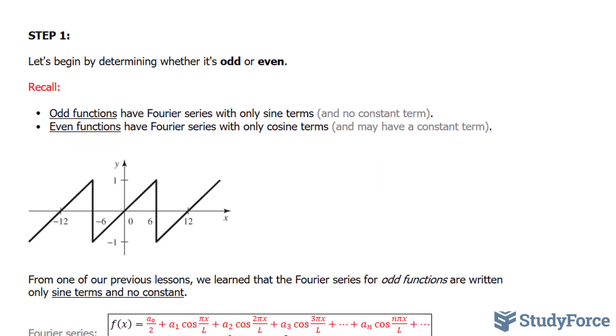In step number 1, we have to begin by determining if the waveform is odd or even. And if you're unfamiliar with what these words are, an odd function of Fourier series with only sine terms. And you can determine if a waveform is odd if it's symmetrical about the origin or both the x and the y axis. Take, for example, this wave.